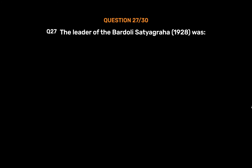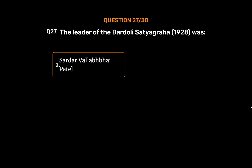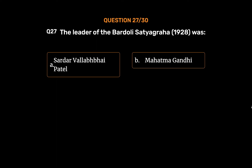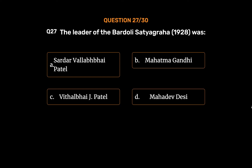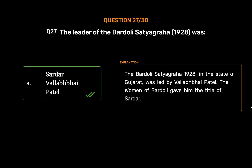Question No. 27. The leader of the Bardoli Satyagraha, 1928, was: Option A: Sardar Vallabh Bhai Patel. Option B: Mahatma Gandhi. Option C: Vithal Bhai J. Patel. Option D: Mahadev Desai. The correct answer is Option A: Sardar Vallabh Bhai Patel. The Bardoli Satyagraha, 1928, in the state of Gujarat, was led by Vallabh Bhai Patel. The women of Bardoli gave him the title of Sardar.